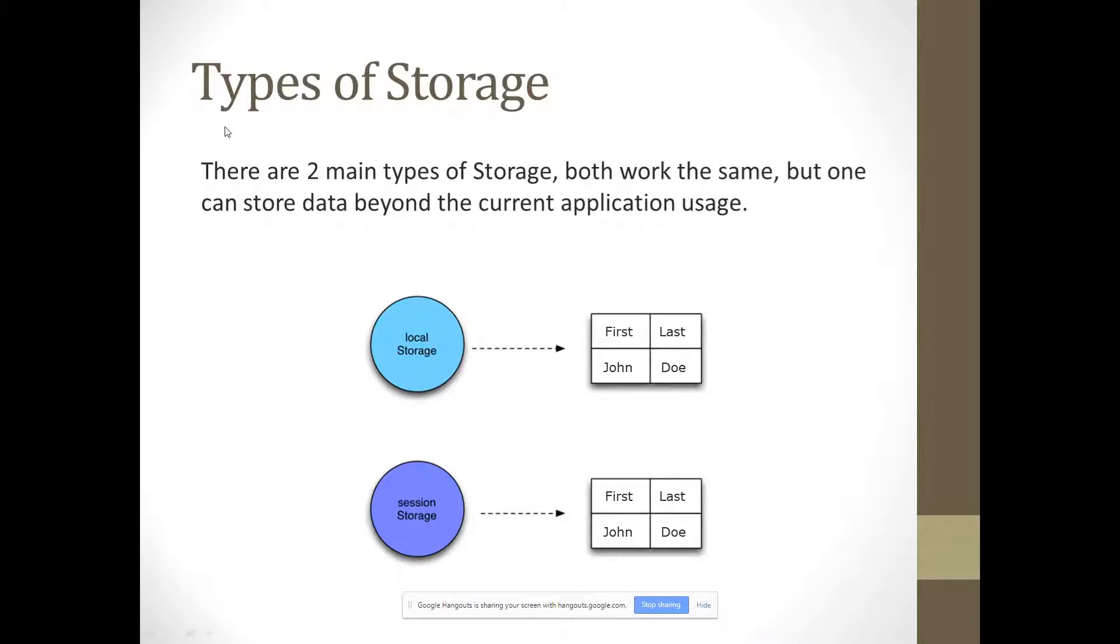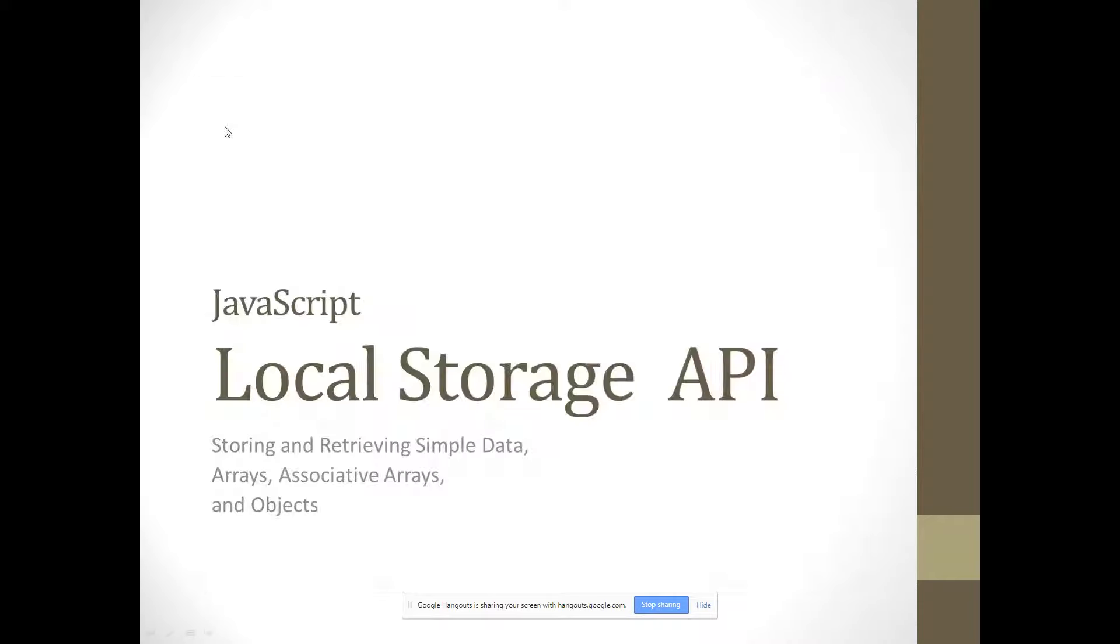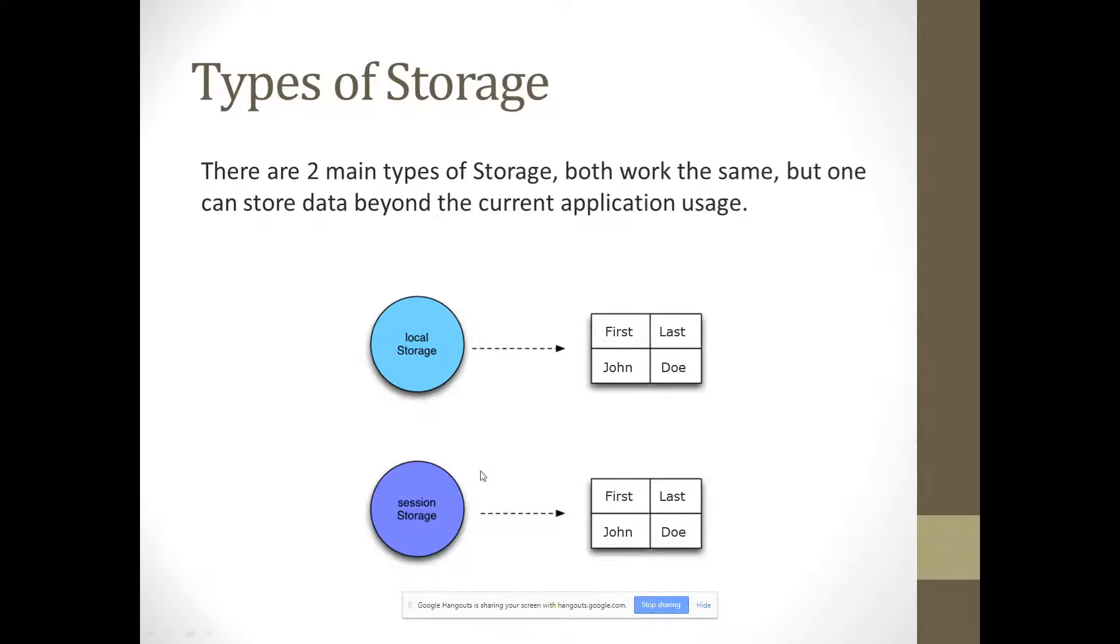So moving into the stuff, there's two types of storage, going back to what we're doing, local storage. Two types of storage. There's local storage and session storage. They're basically the exact same thing, except one is the session storage is based on, when you're on the internet, it's based on what you're doing right now, whereas local storage is stuff that is being saved to your computer right now. So they're doing the same thing, but one is based on your current usage and one is based on just local files. Important distinction.